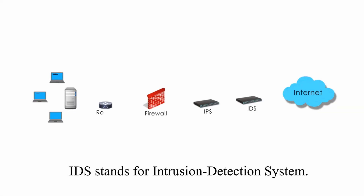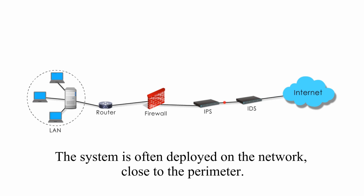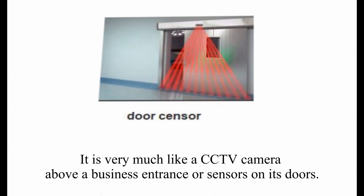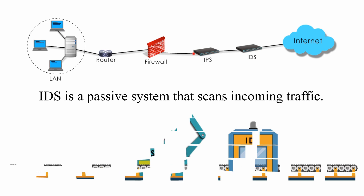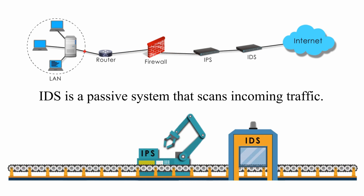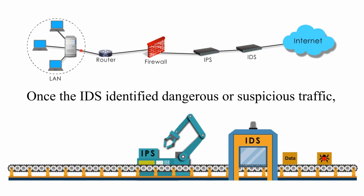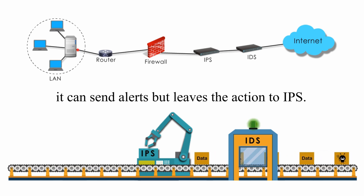IDS stands for Intrusion Detection System. The system is often deployed on the network close to the perimeter. It is very much like a CCTV camera above a business entrance or sensors on its doors. IDS is a passive system that scans incoming traffic. Once the IDS identifies dangerous or suspicious traffic, it can send alerts but leaves the action to IPS.